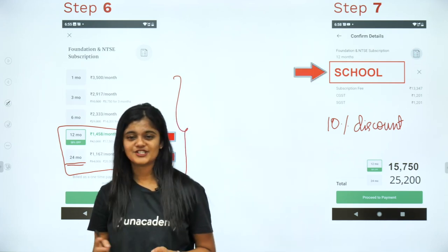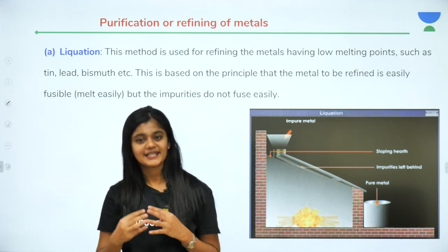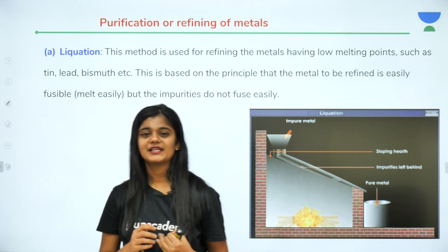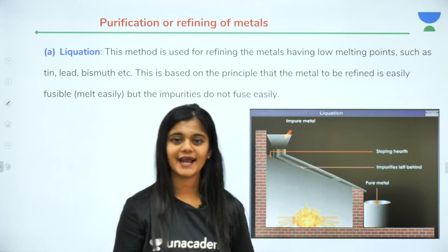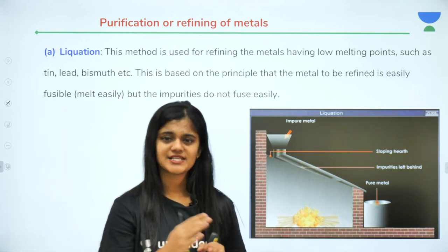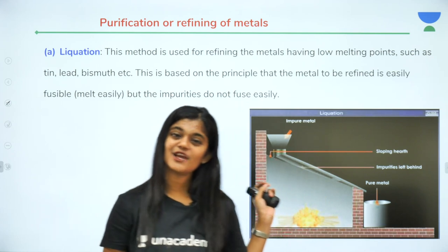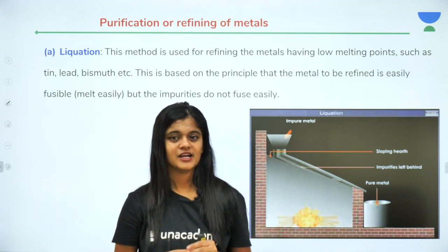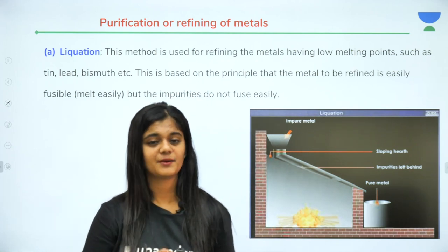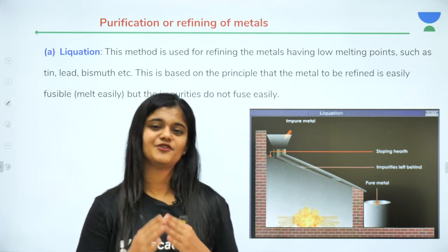Let's continue with Metals and Non-metals. The final step remaining in our metallurgical processes: we have already seen concentration of the ore, conversion of ore into its oxide, and the reduction process. Now we will see the final step after reduction of the metal — the last step, which is refining and purification.